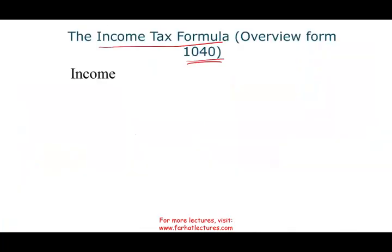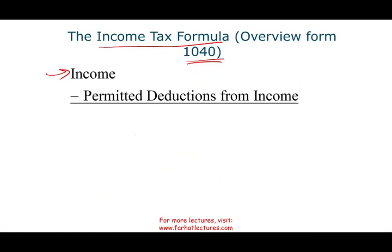So this is the income tax formula. We start with income — and we're going to have a whole chapter about income. Then from income, we are permitted to deduct certain things. We're going to have a whole chapter about what we can deduct.